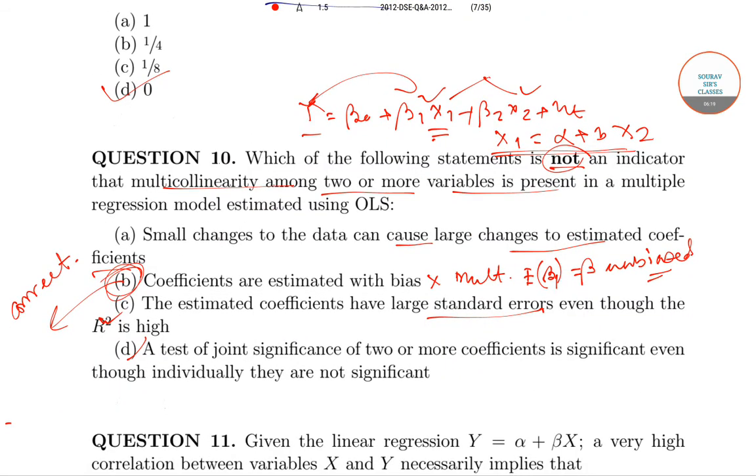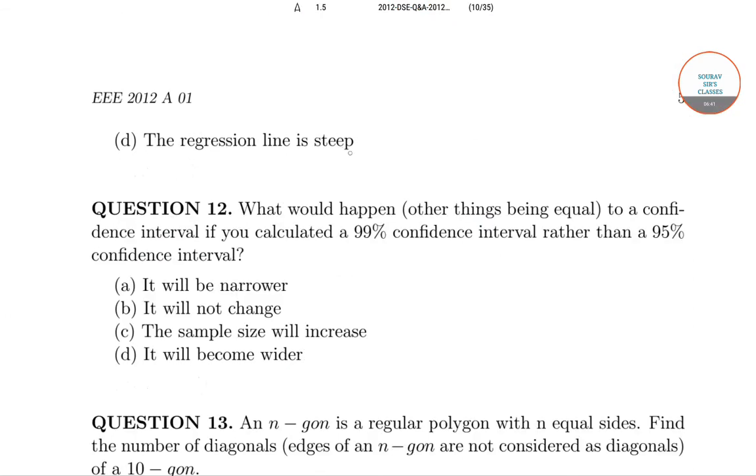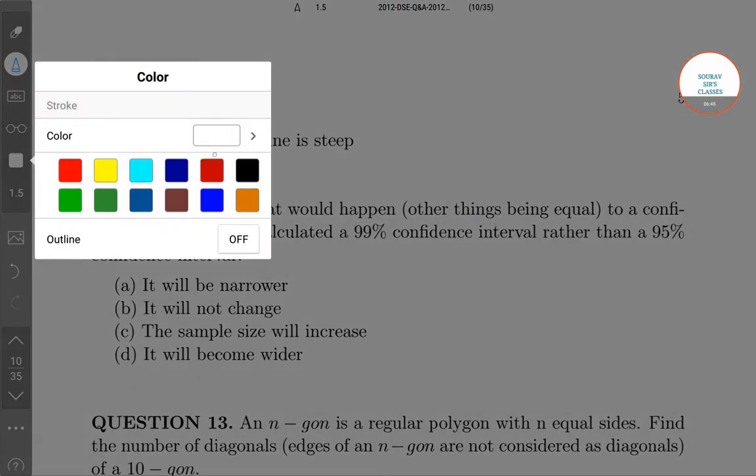Now moving to question 11. Given the linear regression y = α + βx, a very high correlation between variables X and Y necessarily implies what? The slope coefficient β is statistically significant, the observations X and Y lie along a straight line, small changes in X cause large changes in Y, or the regression line is steep.